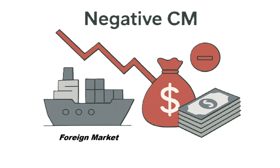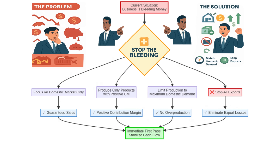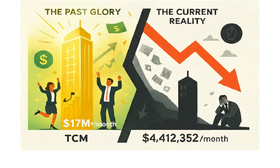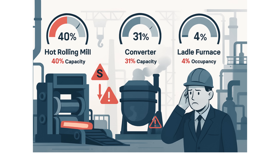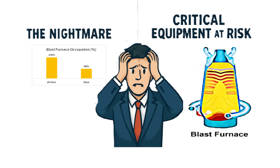In this new, awful reality, what does the optimal mix model say? The immediate first pass says stop the bleeding: produce and sell only the domestic products — the ones still making positive CM — only up to the maximum amount the domestic market will buy. Forget exports entirely for now. The best they can do is $4,412,352 per month — a shadow of what it was. And inside the factory: devastating underutilization. The hot rolling mill runs at only 40% capacity, the converter at 31%, and the ladle furnace at almost idle — just 4% occupancy.